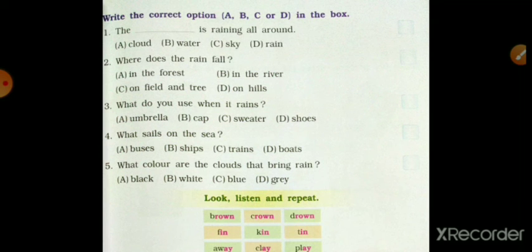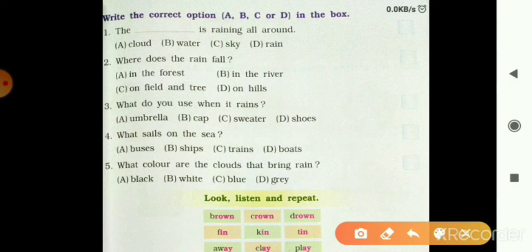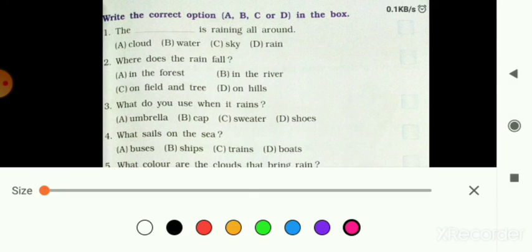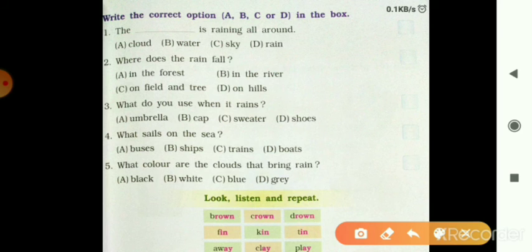Second is, where does the rain fall? In the forest, in the river, sea, on field and tree or on hills? So answer is on field and tree as well.